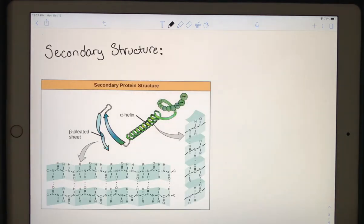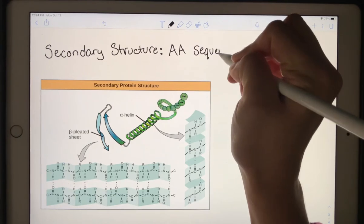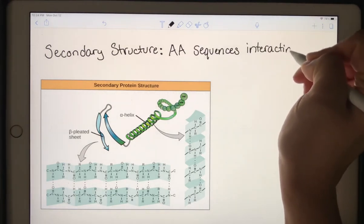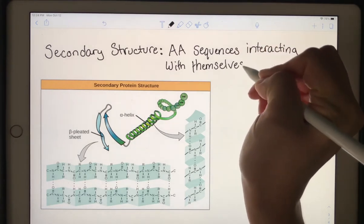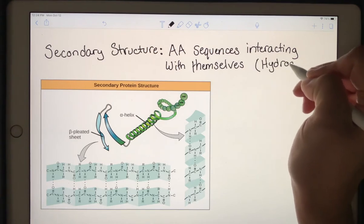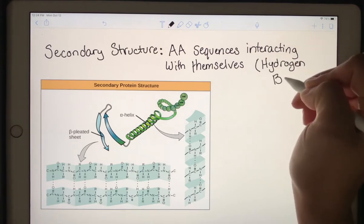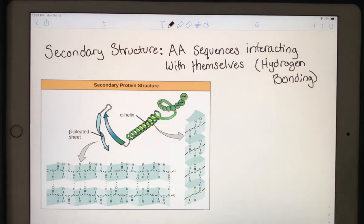For secondary structure, we are interested in how amino acid sequences interact with themselves. And this is all going to be due to hydrogen bonds. And that's why I copied this picture. You do not have to draw this.